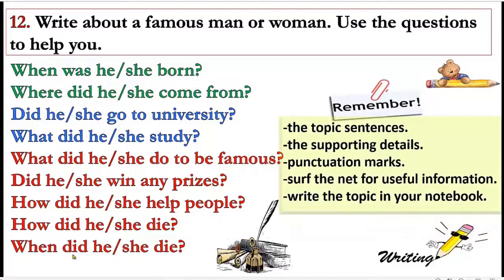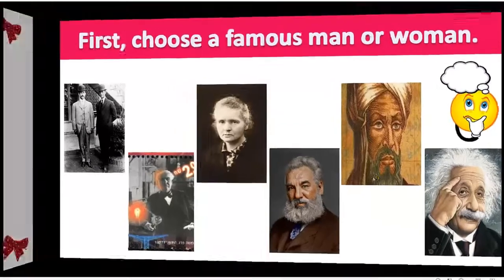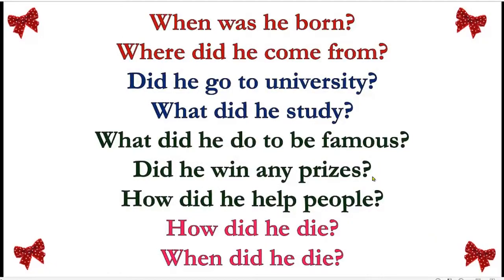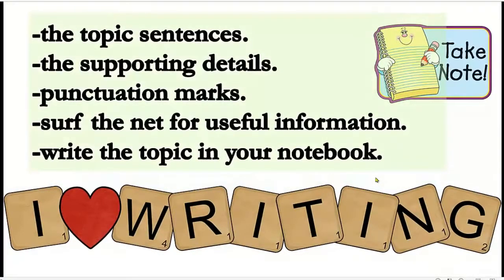To write a good paragraph about anyone, you have to start with a topic sentence — it should be general and attract the reader's attention. The second step is writing supporting details. Don't forget punctuation marks. You also have to end your paragraph with a concluding sentence to close the topic in a good way. First, choose a famous man or woman and write about these questions. Don't forget: topic sentence, supporting details, and concluding sentence.